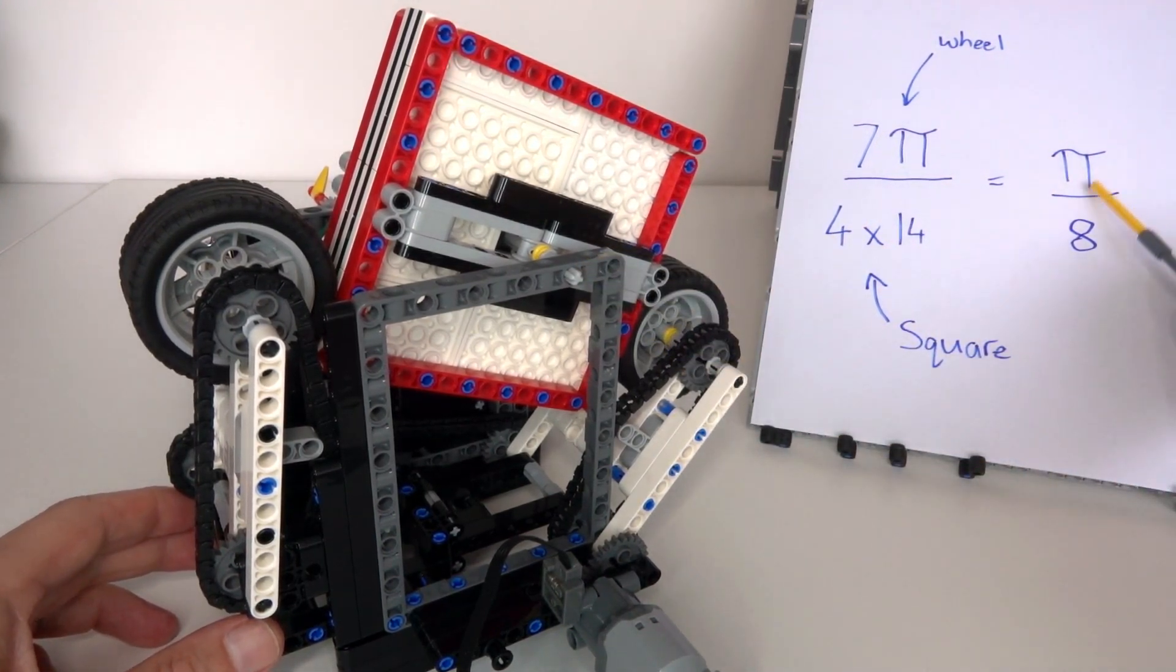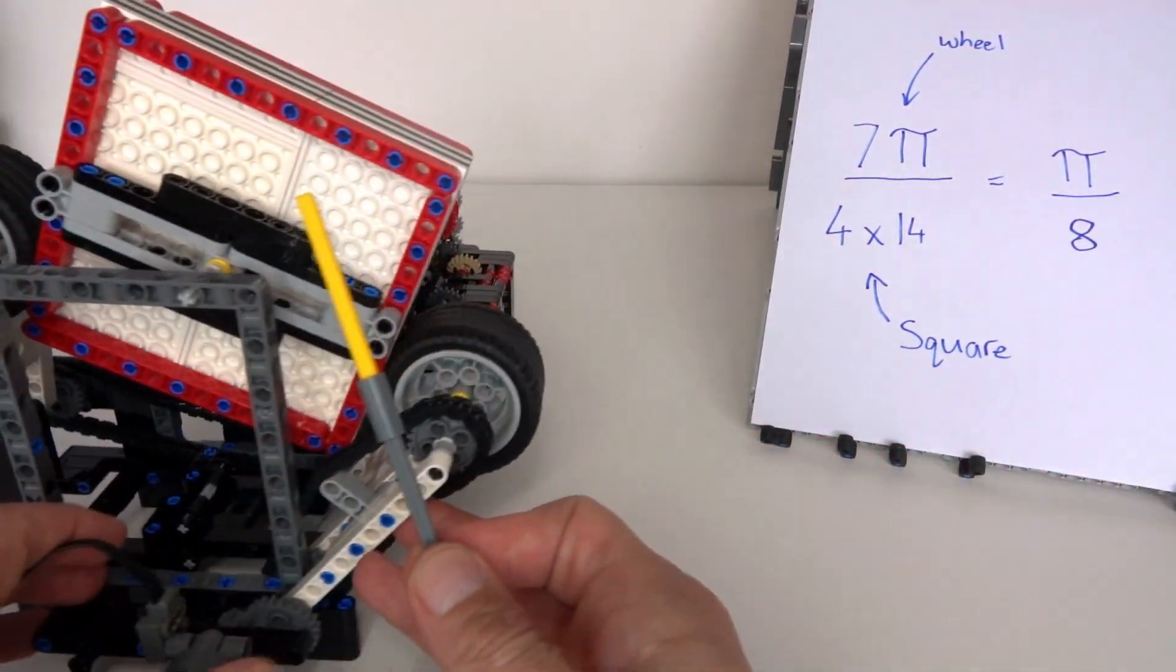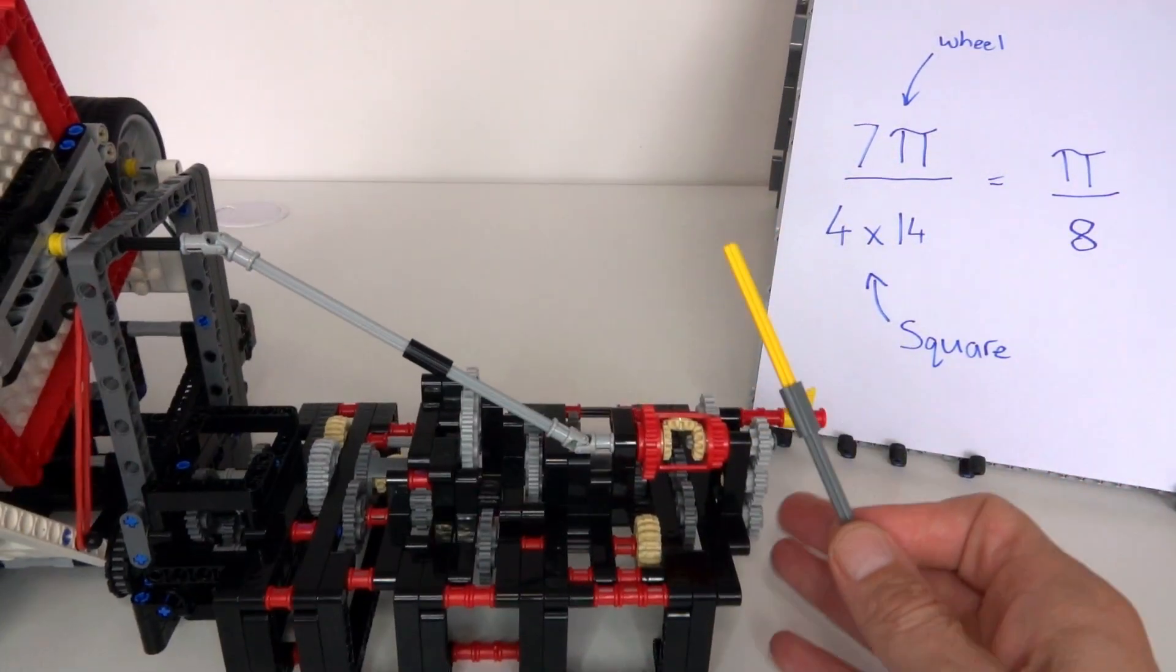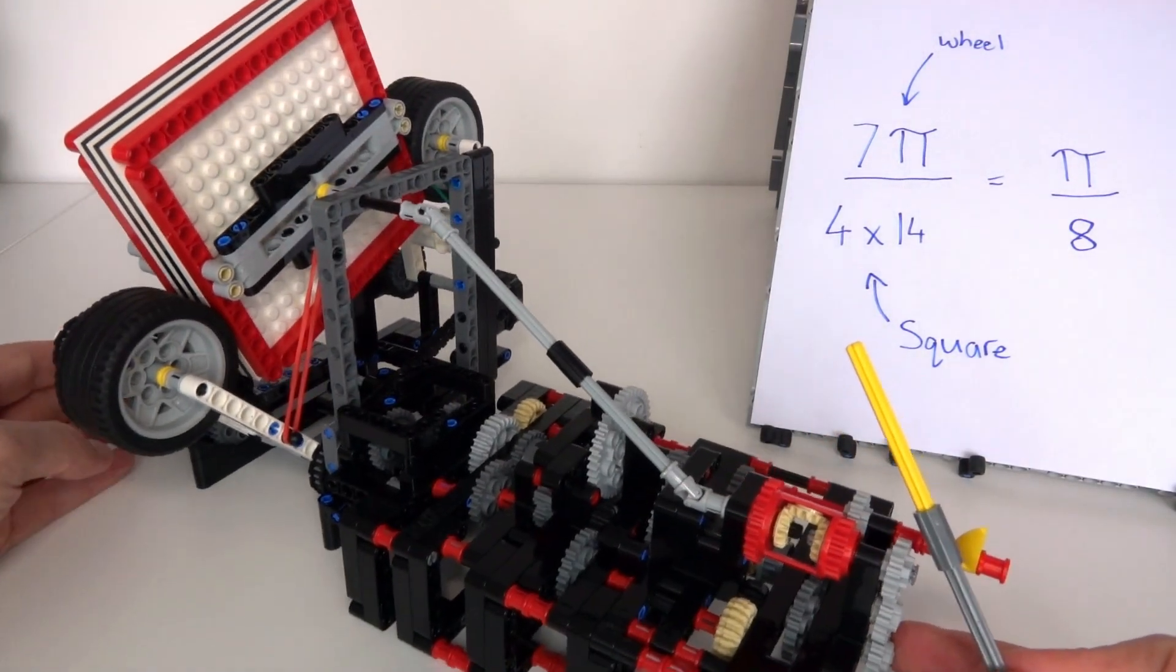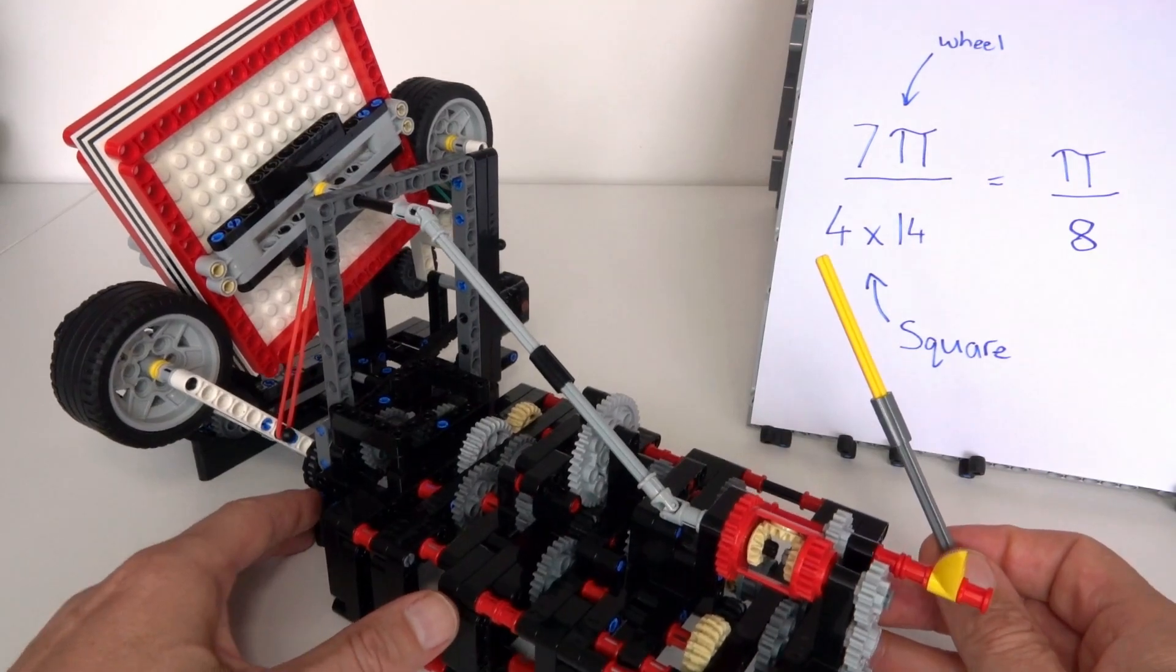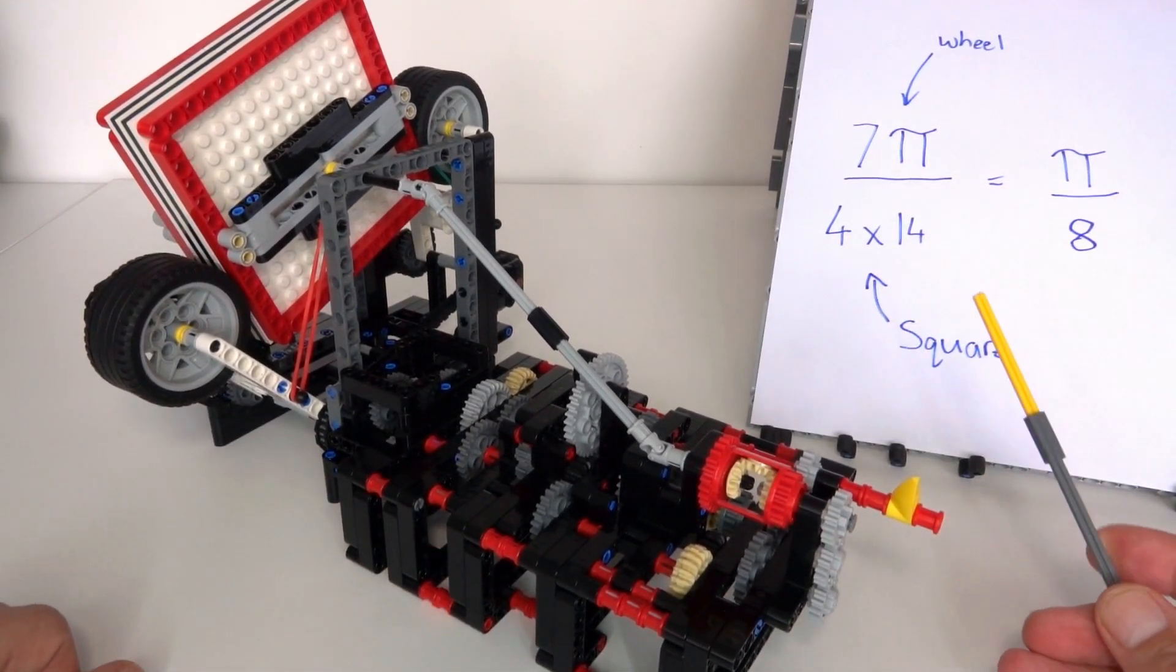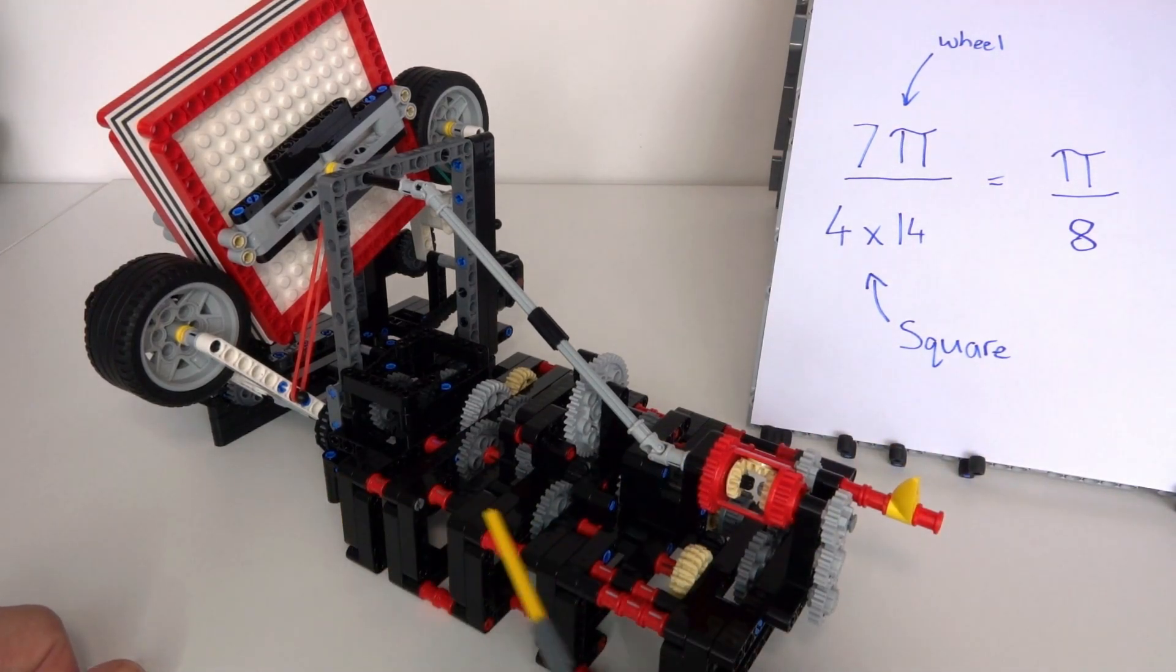We're now creating a gearing ratio between this axle and that axle of pi over eight—that wheel driving the square. What is the rest of the gadget for? The rest of the gadget is to actually verify that result. When you do the math it seems to work out, but in practice you can always find small mistakes or assumptions that don't quite work out.